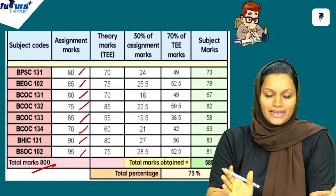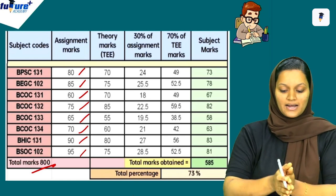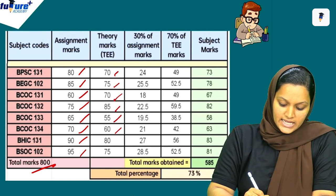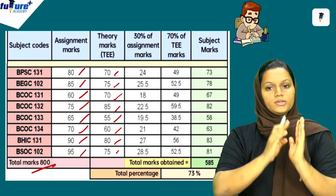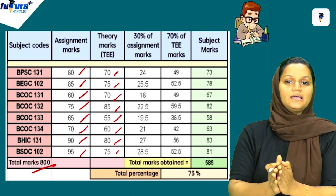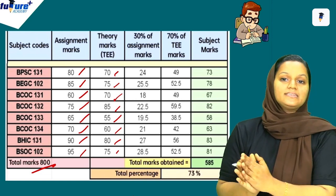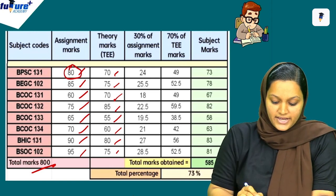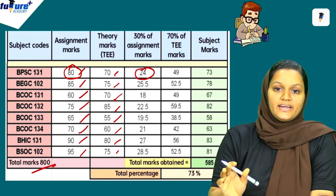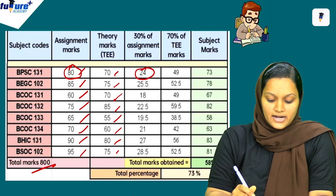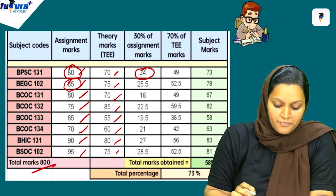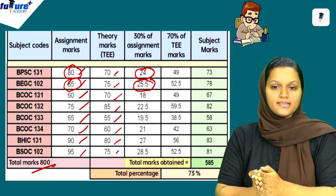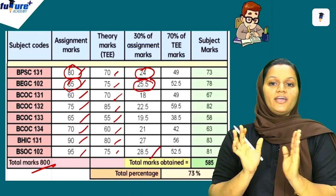The next column is the theory marks — we are going to get the theory exam marks. Now we will get the calculation. The assignment mark for 80 is calculated as 30%, giving 24. The assignment mark for 85 is calculated as 30%, giving 25.5.